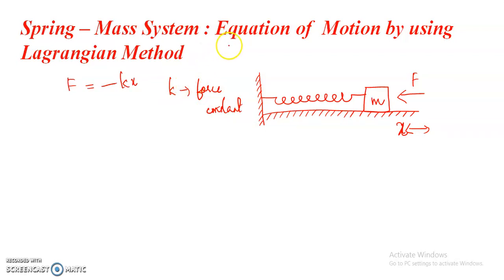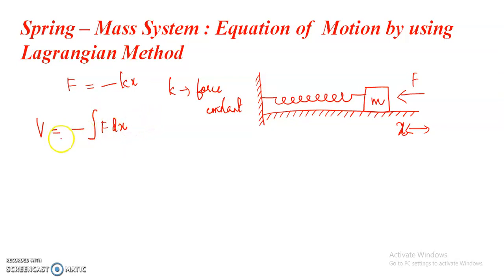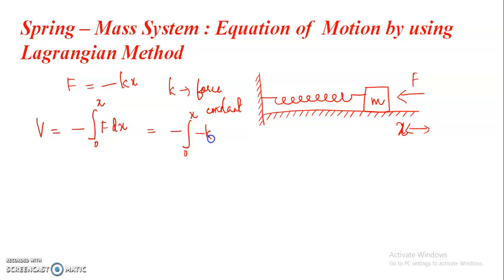Now we are going to find the equation of motion of the spring-mass system. If F is the force, then the potential energy of the system at displacement X is given by V equal to minus the integral of F dx. We know that force is the negative gradient of potential. So V equals minus integral from 0 to X of F dx. Substituting F equal to minus KX, we get V equal to half KX squared.